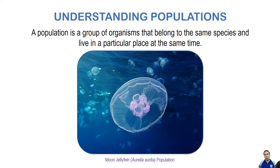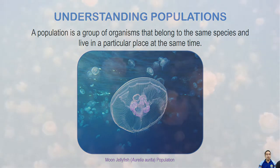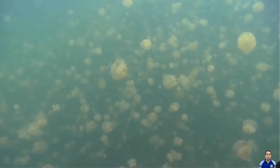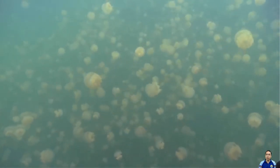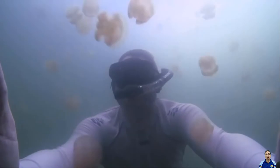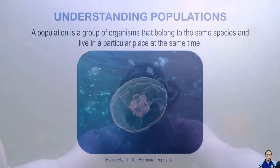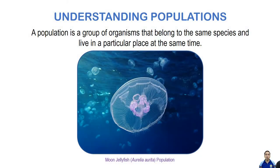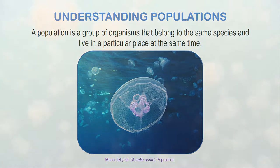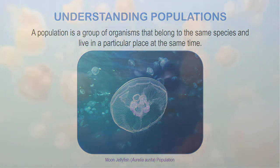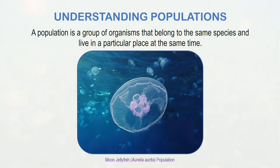A group of organisms of the same species that live in a particular place and time is called a population. Take note that both space and time are part of the definition — we are referring to organisms that really thrive in that particular environment at some time. We cannot refer to a group of jellyfish in Hawaii and another group here in the Philippines as belonging to the same population. In the same manner, jellyfish living in a particular habitat last year is not the same population as those that thrive at the present moment.